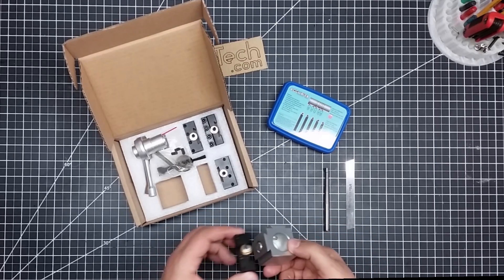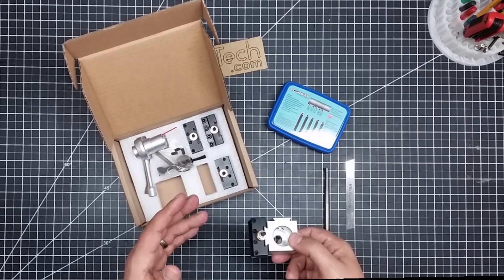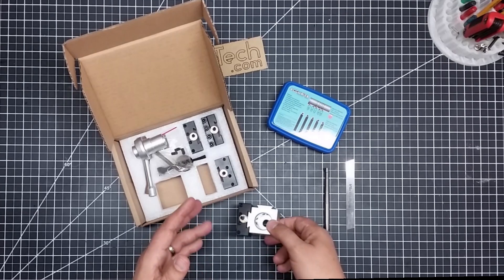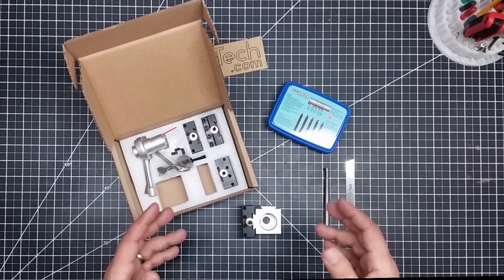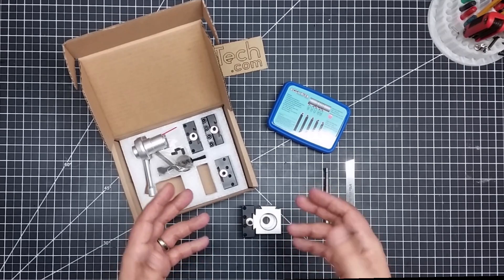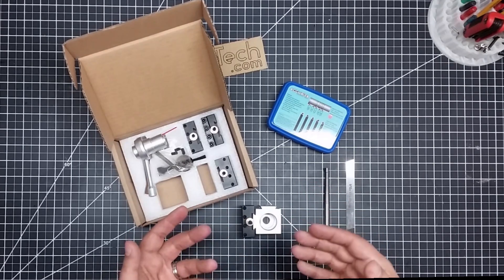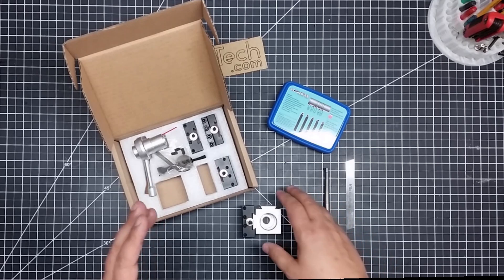The other advantage to these is you don't have to shim. One of the big problems in the stock configuration of most of the Mini Lathes is they come with a very basic tool holder. You have to shim them up, and that's always a pain in the butt.